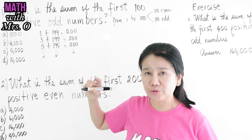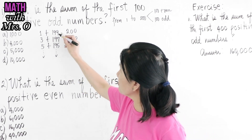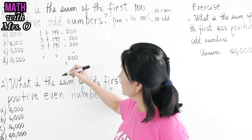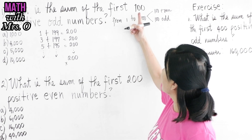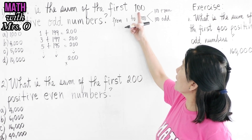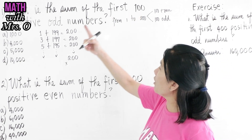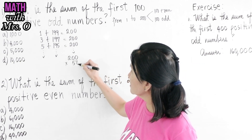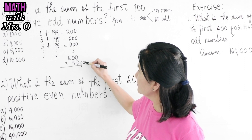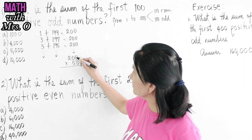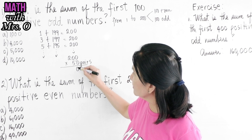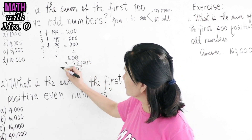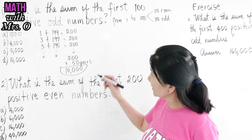So therefore, we can take a shortcut. Each pair gives us 200. Multiply by how many pairs there are if we have the first 100 positive odd numbers — there are 50 pairs. So multiply 200 by 50. We get 3 zeros: 5 times 2 is 10, so the answer is 10,000.